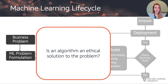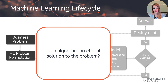Another question to ask at this point is whether an algorithm is in fact an ethical solution to the problem itself. Maybe there is a simple rule-based system we could use instead of a machine learning solution, or maybe it needs to be a rule-based system or a machine learning model in combination with a human.